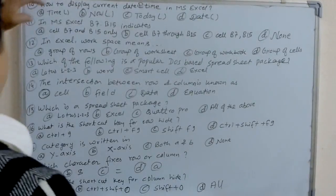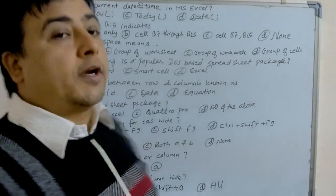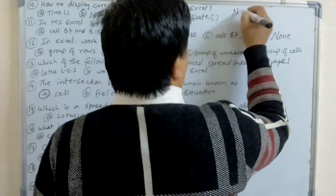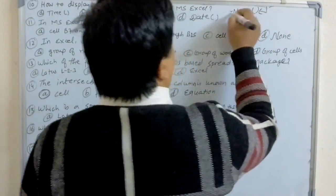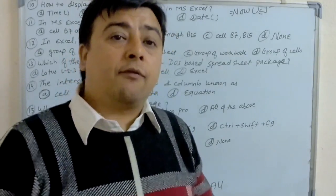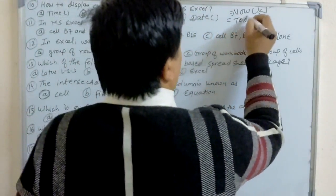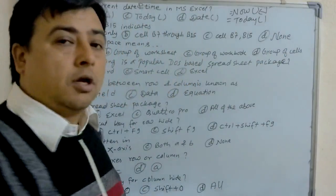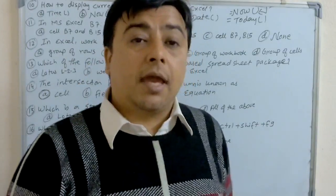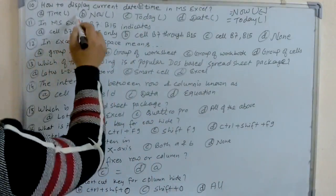Next question: how do you display the current date and time in MS Excel? If you want to display only the current date, you use the TODAY() function. But to display both the current date and time, you use the NOW() function. So the answer is B — the NOW() function.